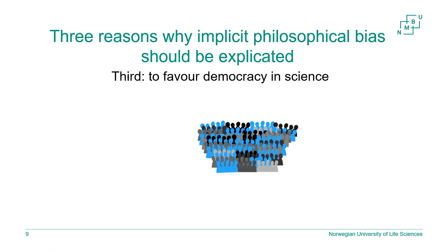A third reason: making implicit philosophical biases explicit is important for democracy in science. If arguments from experts are transparent — if their philosophical biases and extra-evidential premises are stated — then other actors will be able to look at those premises and scrutinize them. This is particularly important when a scientific evaluation has direct consequences for a community which is not a community of scientists.